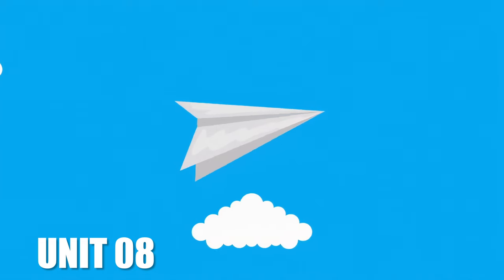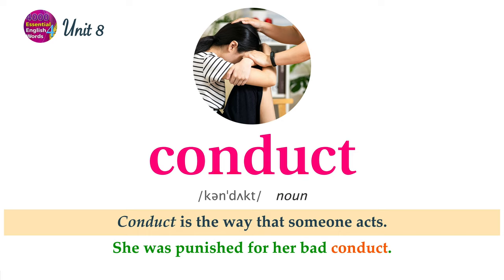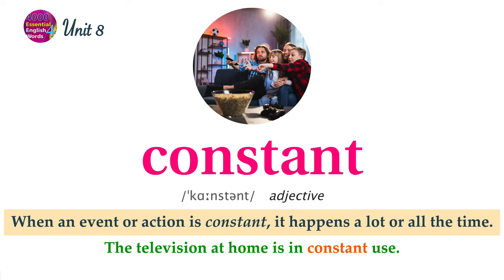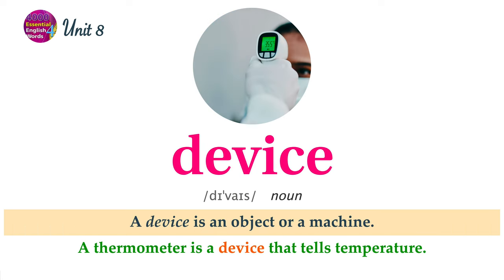Unit 8 Word List. Access is the right to enter or use something. The manager was the only person with access to the password. Conduct is the way that someone acts. She was punished for her bad conduct. When an event or action is constant, it happens a lot or all the time. The television at home is in constant use. A crack is a narrow space between the parts of something broken. The old window was covered with cracks. A device is an object or a machine. A thermometer is a device that tells temperature.